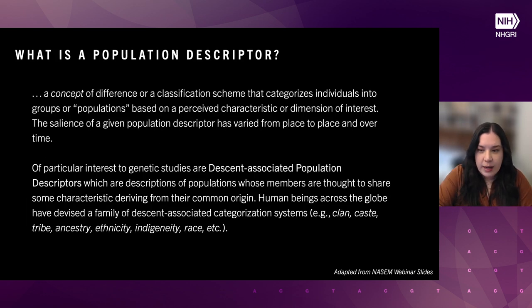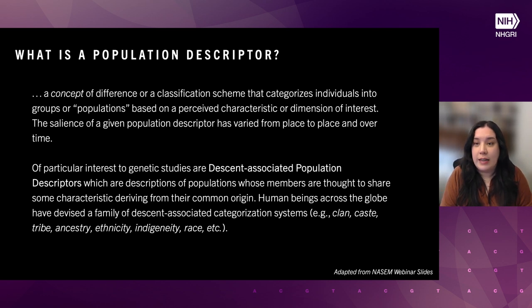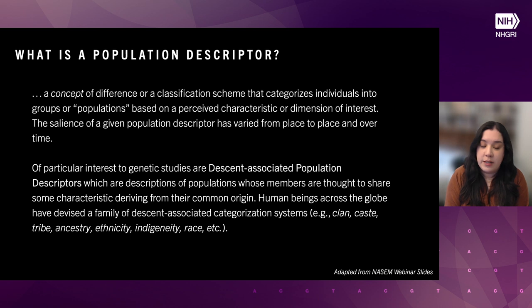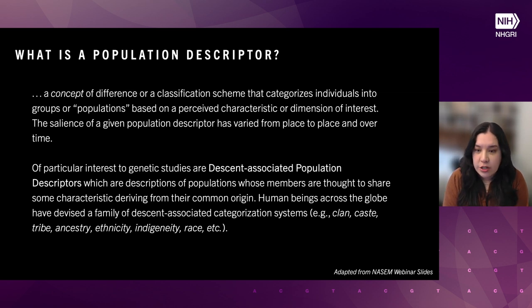When we talk about a population descriptor, it's this concept of difference for classifying individuals into groups or populations — about a perceived characteristic or dimension of interest. For this report, we focused on descent-associated descriptors, which means the big ones are race, ethnicity, and genetic ancestry, but it also includes other descent-associated categorization systems such as clan, caste, tribe, and indigeneity. This really shows the state of the field: looking at the GWAS catalog, there was an effort to harmonize existing GWAS in terms of ancestry and group membership.